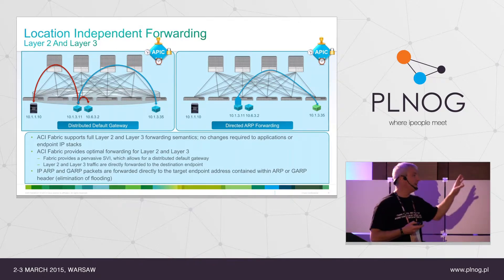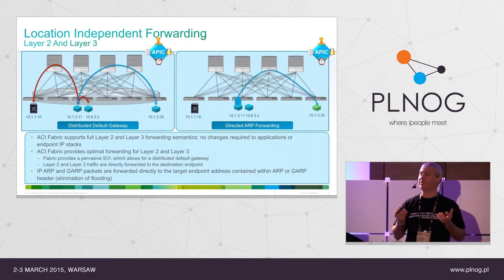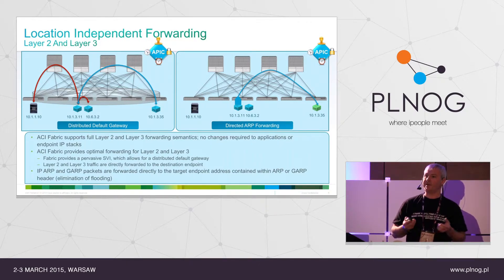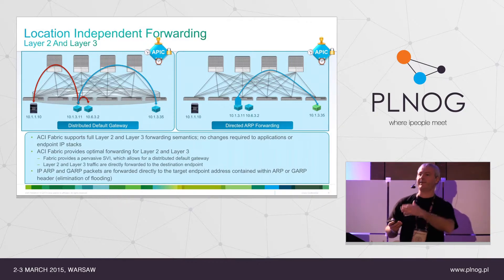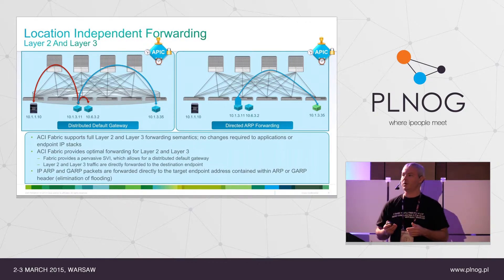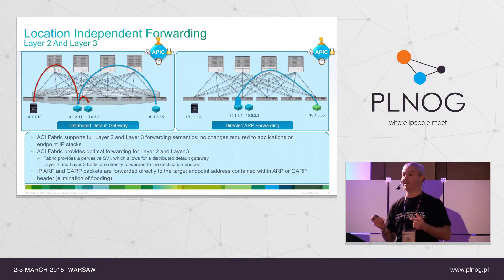We can also remove the need for flooding. We know where every endpoint is inside the fabric, so we no longer need to flood to find it — we can directly send that traffic. We're still going to make it look like a flooded packet, but we don't actually send it on every single port.